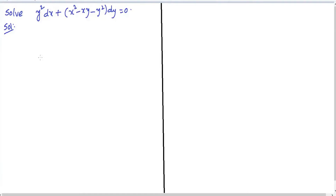Hi everyone, welcome back to our channel. In this video I would like to start problems on the concept of integrating factors. The given problem is: solve y² dx + (x² - xy - y²) dy = 0.